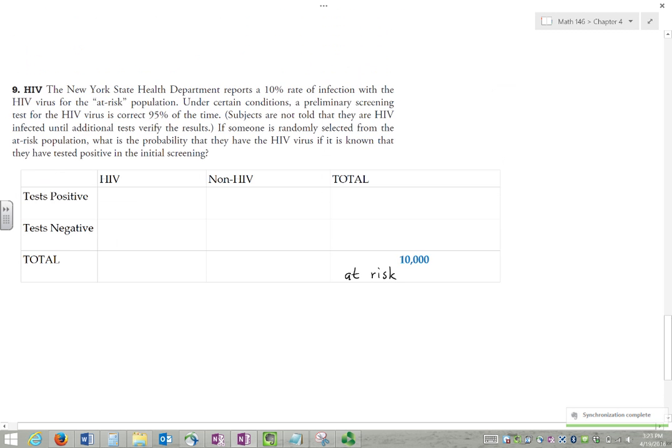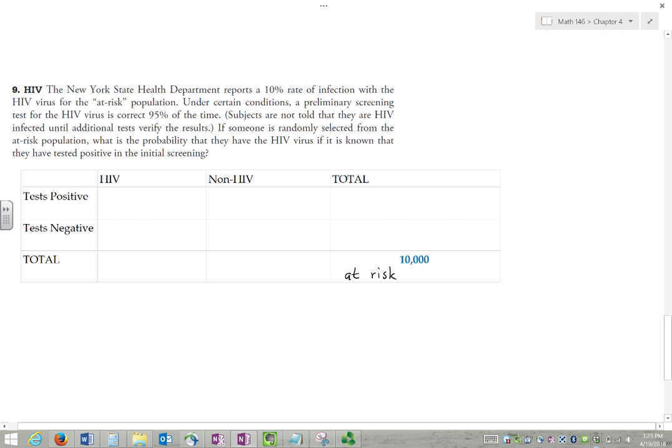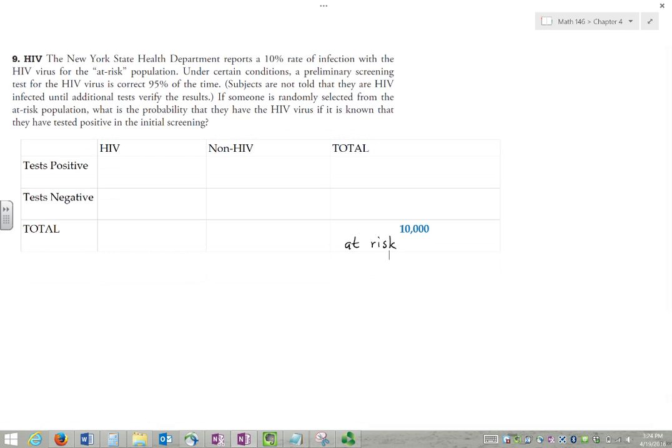So let's write down some of these numbers. We have preliminary screening is correct 95% of the time. So what does that mean? It means that the probability of testing positive, given that they're sick, is 0.95.